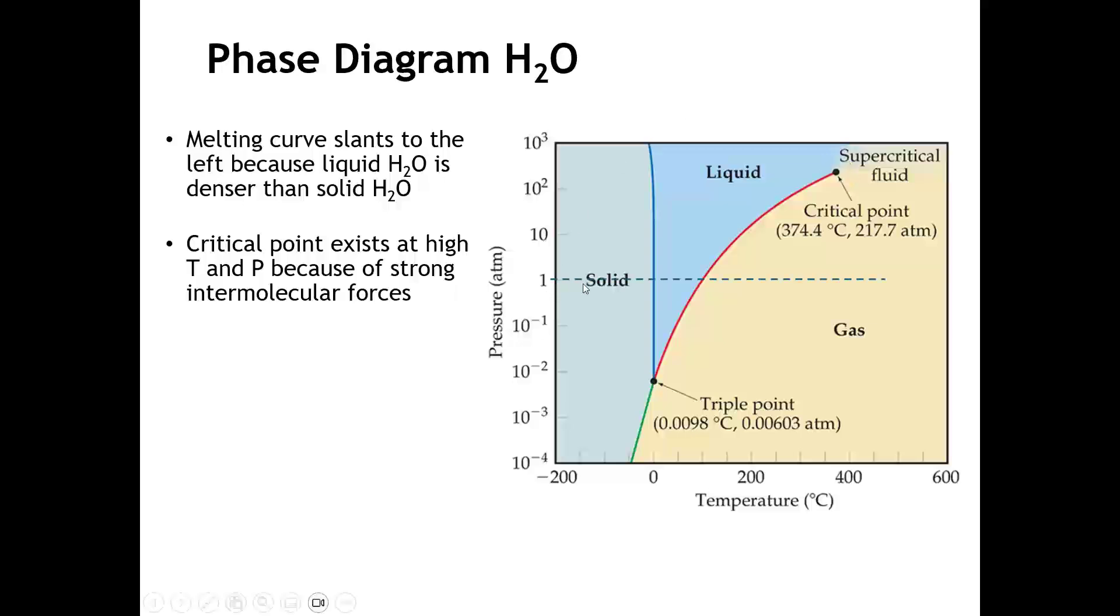If we were to take a horizontal cut at 1 atmosphere pressure, where this cut crosses the melting curve, the blue line, we call that the normal melting point of water. That's 0 degrees C. And where it crosses the red line, the vapor pressure curve, we call that the normal boiling point of water, which is 100 degrees C.